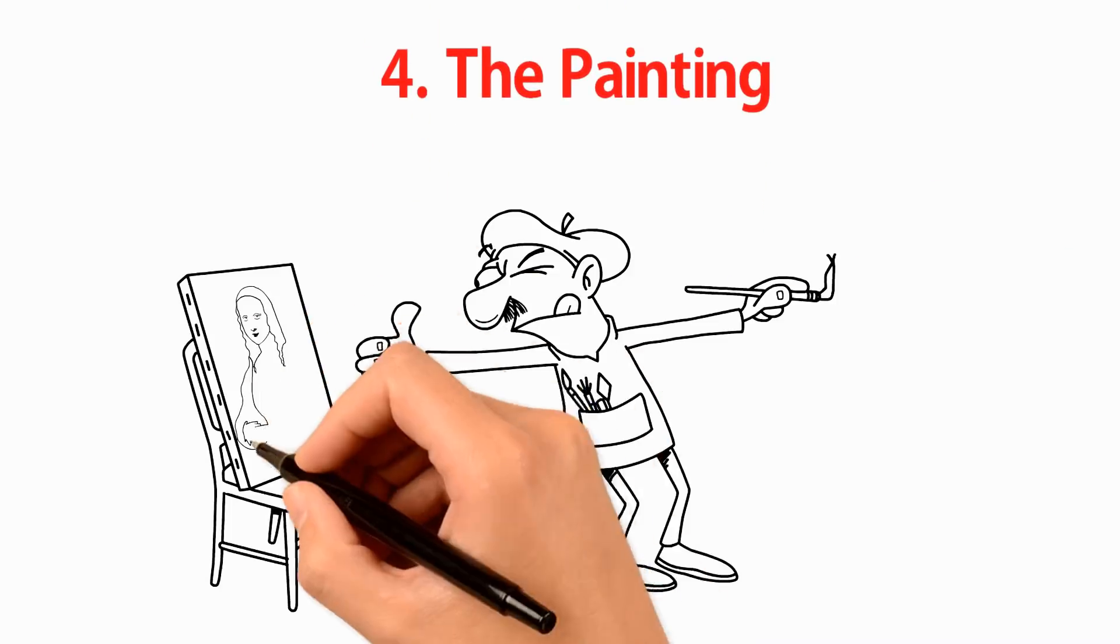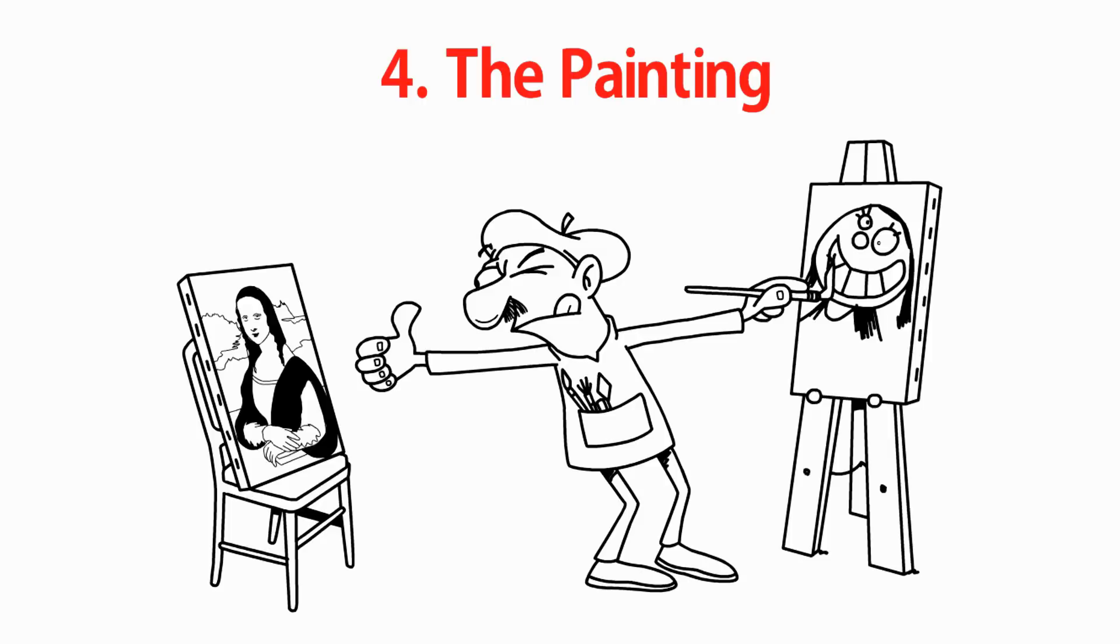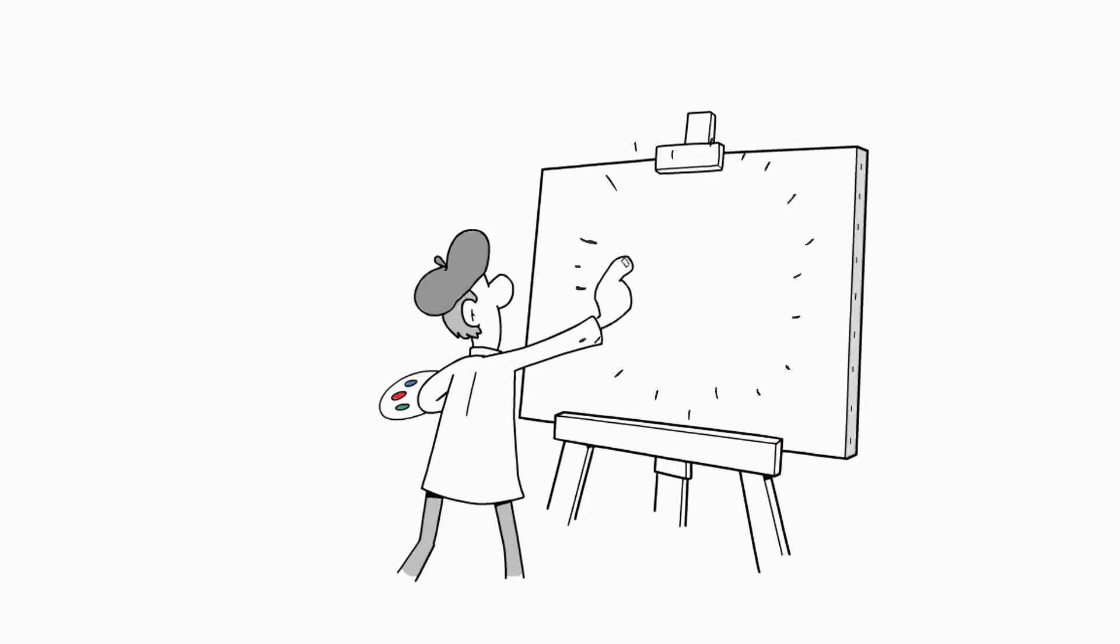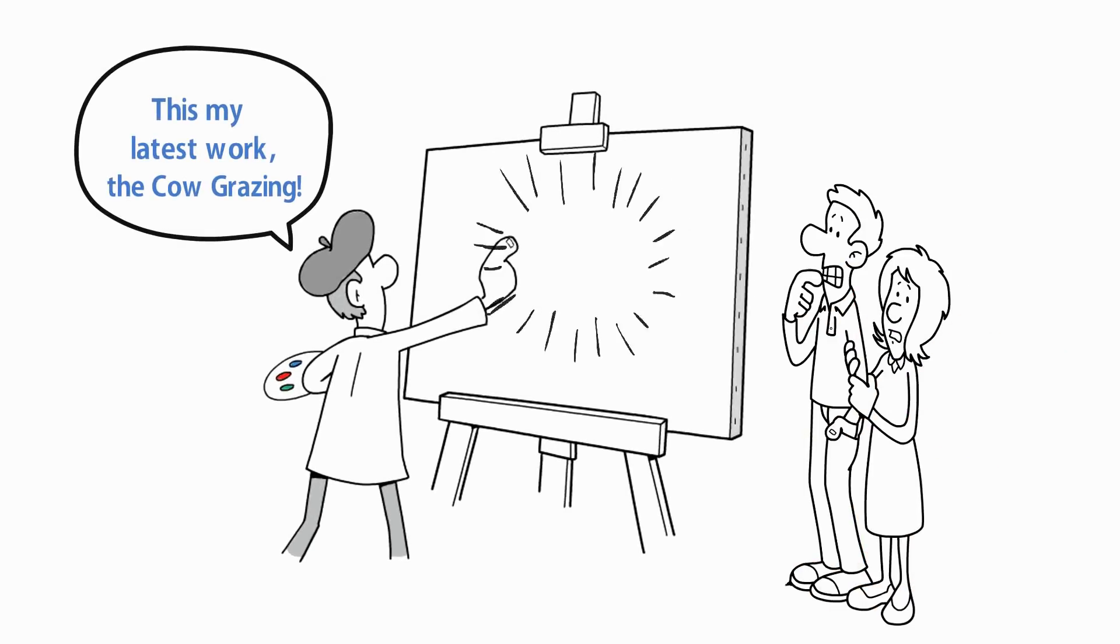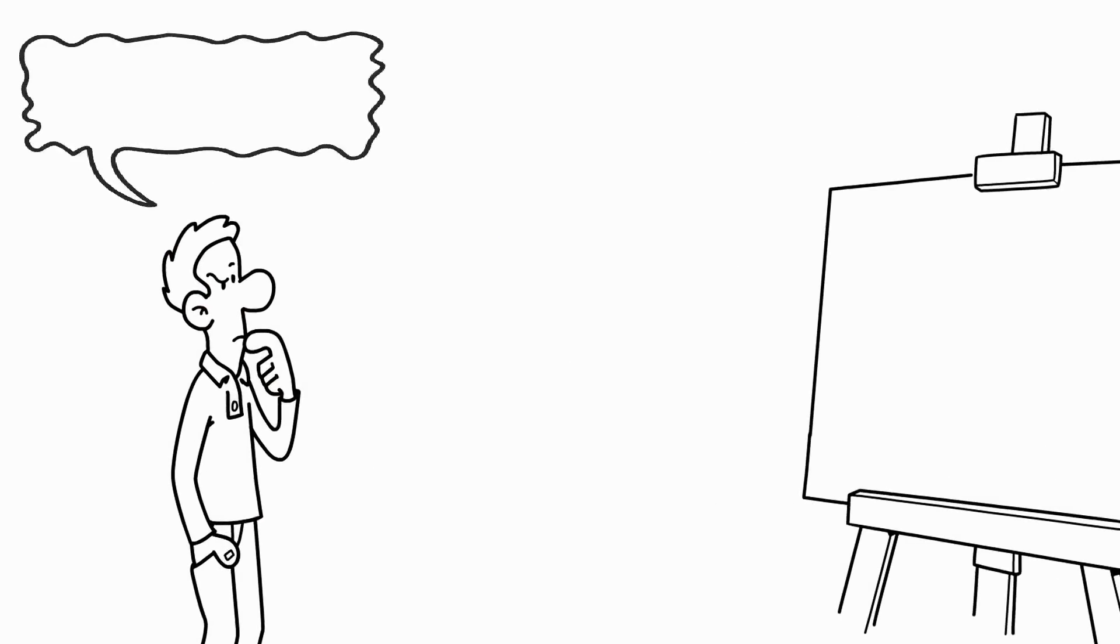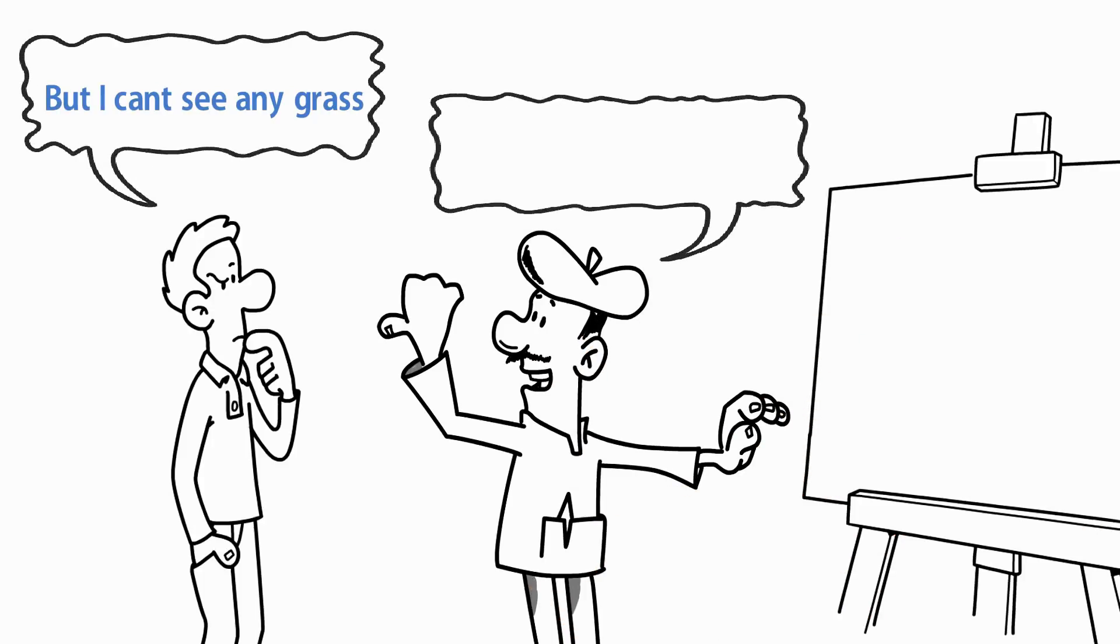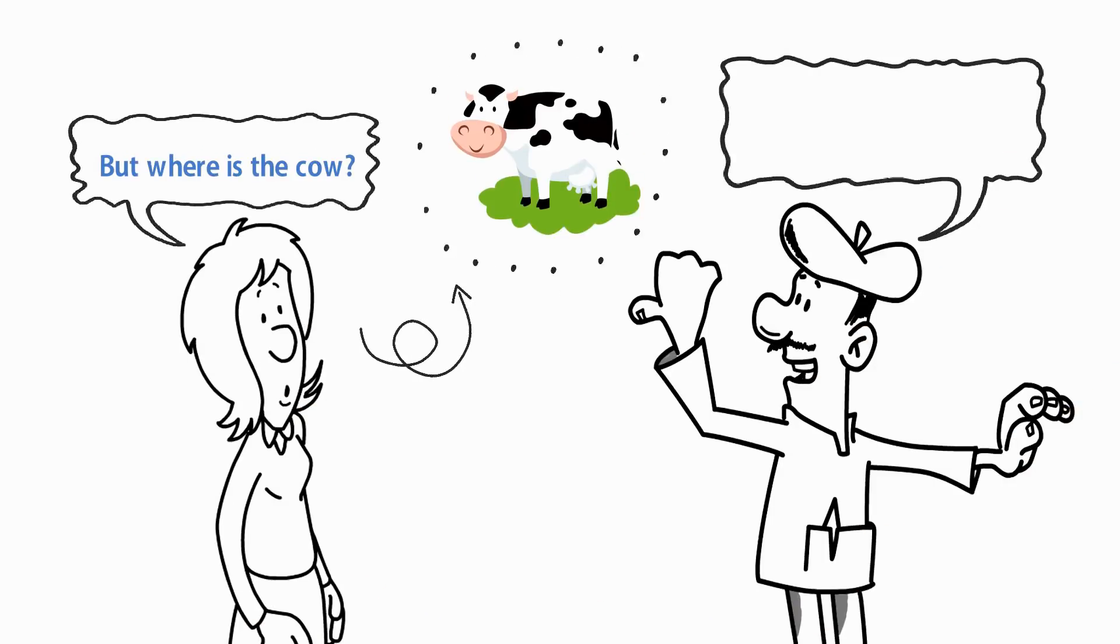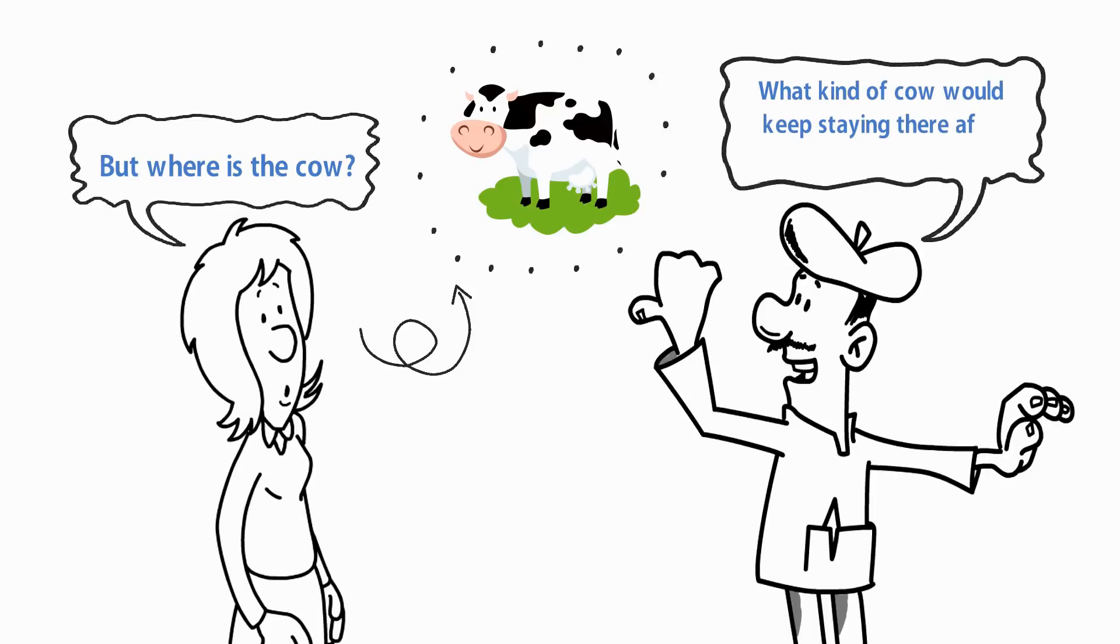Story 4: The Painting. In an art exhibition, an artist was introducing his new painting. "This is my latest work, The Cow Grazing." Many people were confused when they looked at the seemingly empty painting. One visitor asked, "but I can't see any grass." The artist replied, "the cow has already eaten all of it." Another asked, "but where is the cow?" "What kind of cow would keep staying there after eating all the grass?" the artist answered.